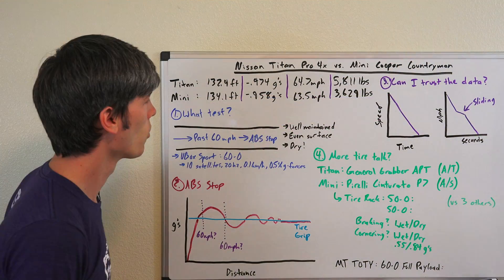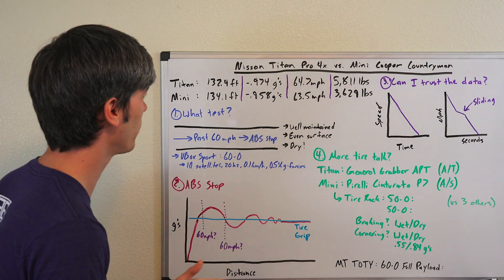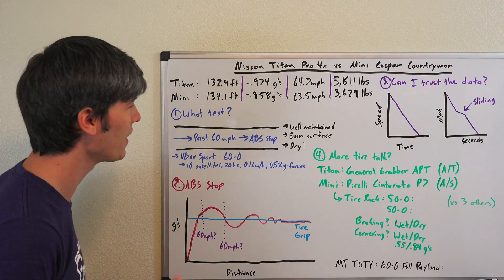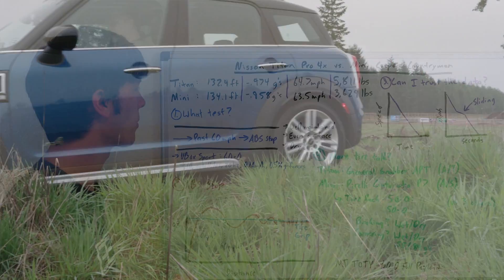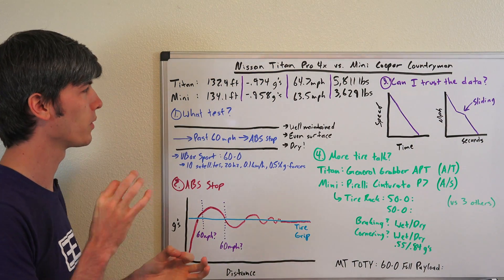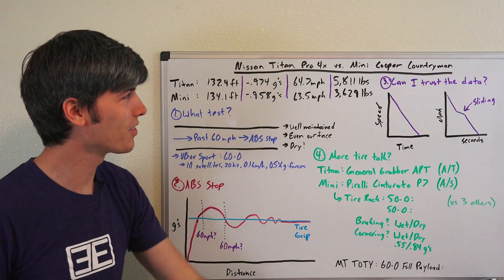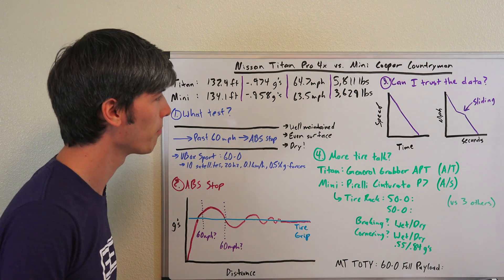One of the more shocking things I found through this testing was the Nissan Titan, which braked from 60 miles per hour to zero in 132.9 feet, versus a Mini Cooper Countryman which braked from 60 to zero in 134.1 feet.